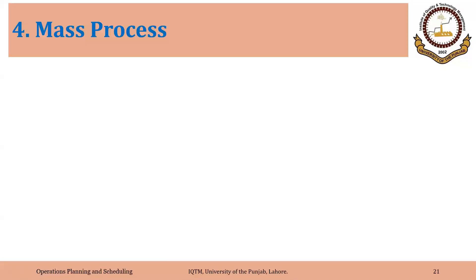The fourth type of process we are going to discuss is what we call mass process, but this process has many names. One of them is mass process, but it is also called line process or line production, or repetitive process.